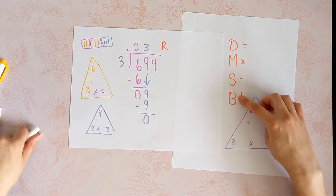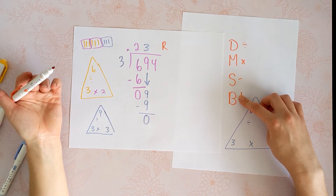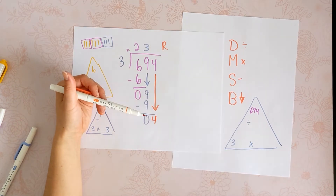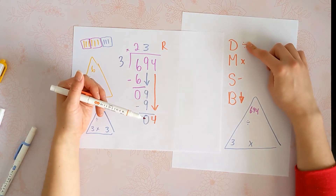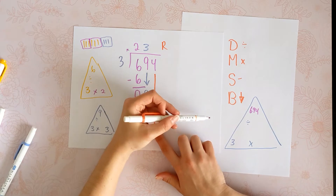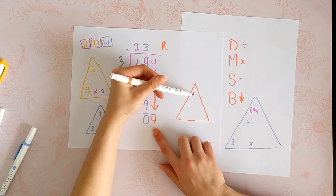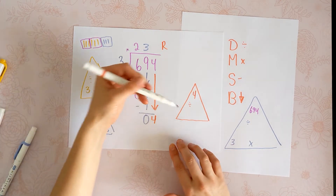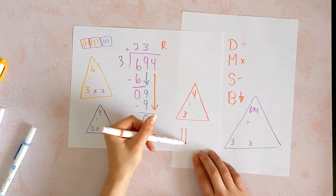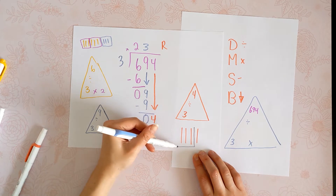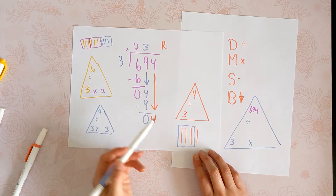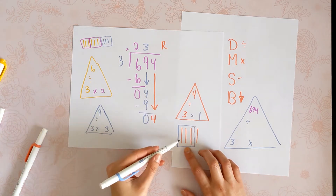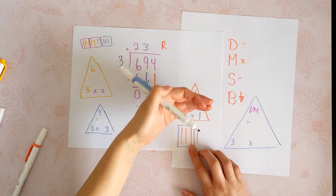Next we're going to bring down the 4, placing it next to the last thing we touched. What do we do next? Divide. We're dividing the 4 by that same 3 we keep using. 4 divided by 3 — how many groups of 3 can I make from 4? Just one. I'm not saying 3 times 1 is 4 — it's not. 3 times 1 is 3, but that's the closest we can get to 4.